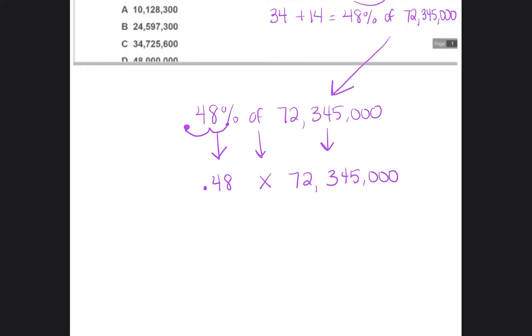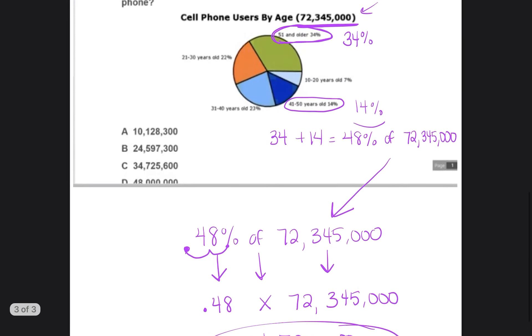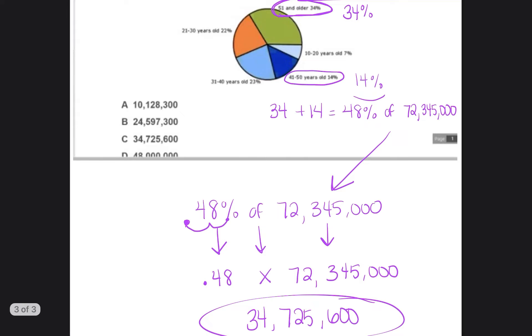Okay, so now it's just a simple multiplication 0.48 times 72,345,000. And you end up getting 34,725,600 people who are 41 years or older who own a cell phone. So the answer would be C.